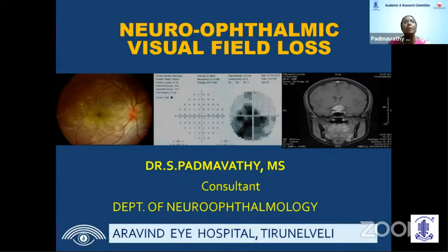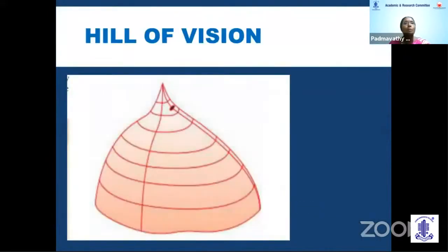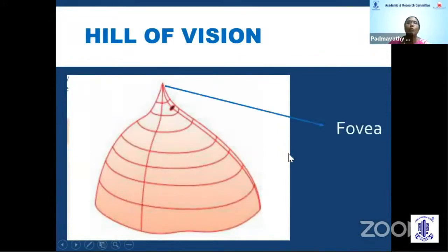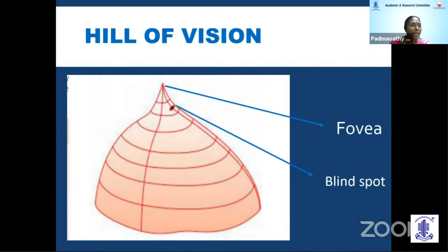The topic assigned to me is neuro-ophthalmic visual field loss. Visual fields represent the extent of the visual field perceived by each eye. It is almost simulated to a hill of vision — you have a high peak point which corresponds to the fovea and a small crater or depression which corresponds to the blind spot. Any alteration or affection in the visual pathway alters this island of vision; it could be in the form of any craters, a depression, or it could be submerged itself.